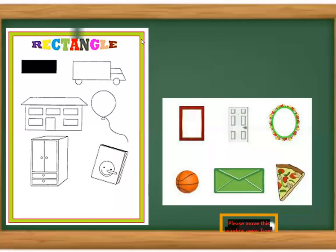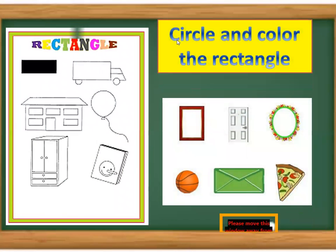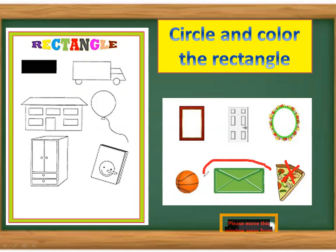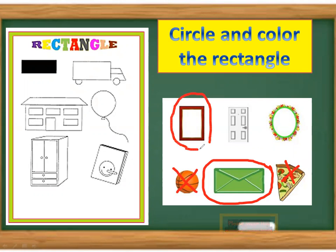Now we will circle the rectangles together. Is this a rectangle? No, that's a triangle. This one? Yes. This one? No. This one? Yes. This one? Yes, that's a rectangle. This one? No.